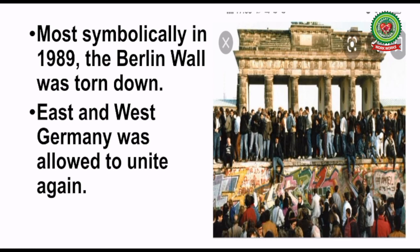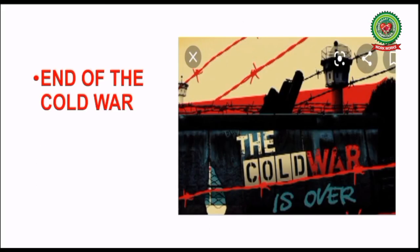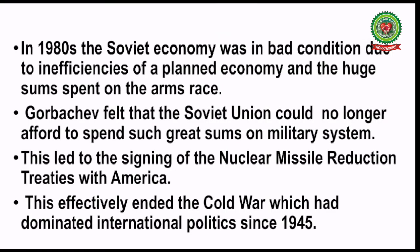This drastically changed the European political map. Starting with Poland, Eastern European countries experienced peaceful democratic revolutions. The pro-Soviet communist parties were replaced by democratic parties — a shift from communism to democracy. Similarly, in 1989, the Berlin Wall was torn down and East and West Germany were allowed to unite again, which was one of the climax points marking the end of the Cold War. Finally, with the disintegration of the Soviet Union into 15 states, the Cold War ended in world politics. In the 1980s, the Soviet economy was in bad condition due to inefficiencies of planned economy and the huge sums spent on the arms race.